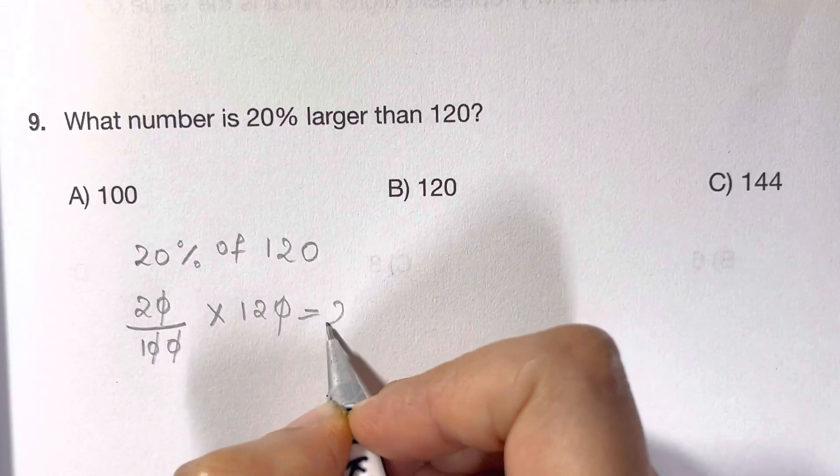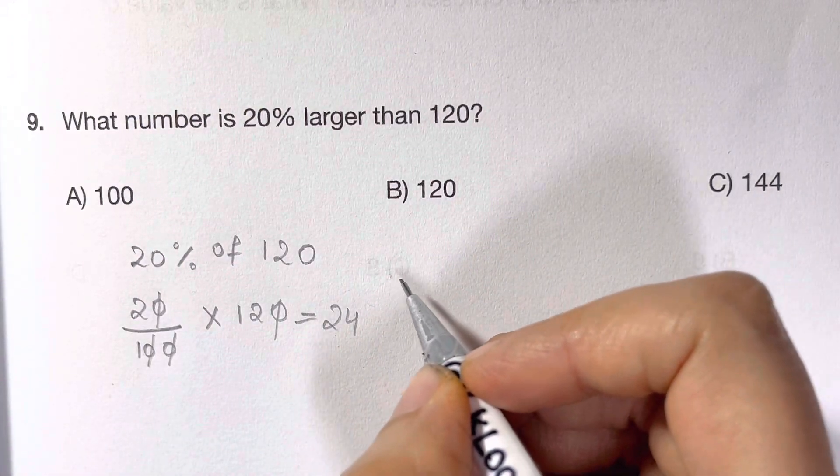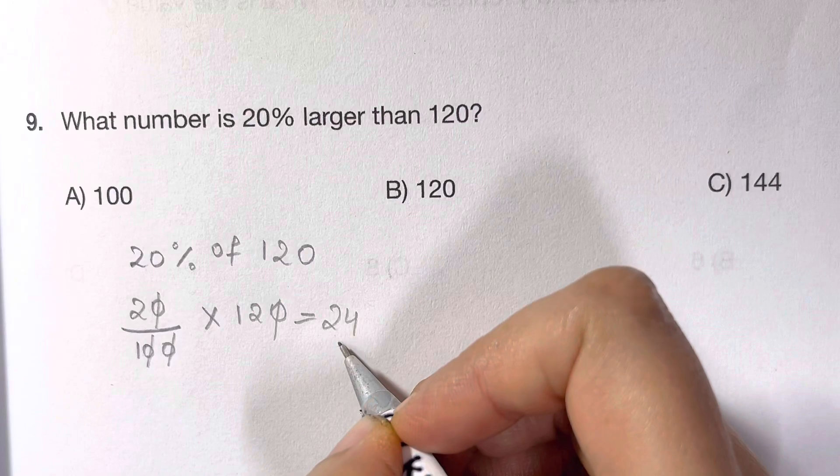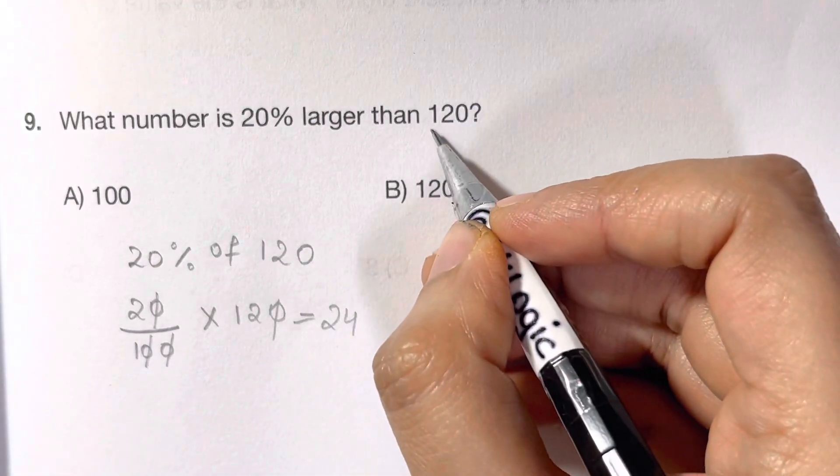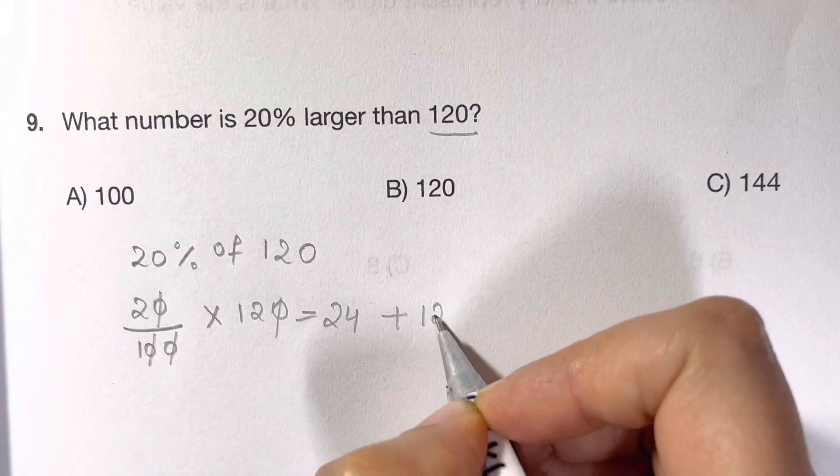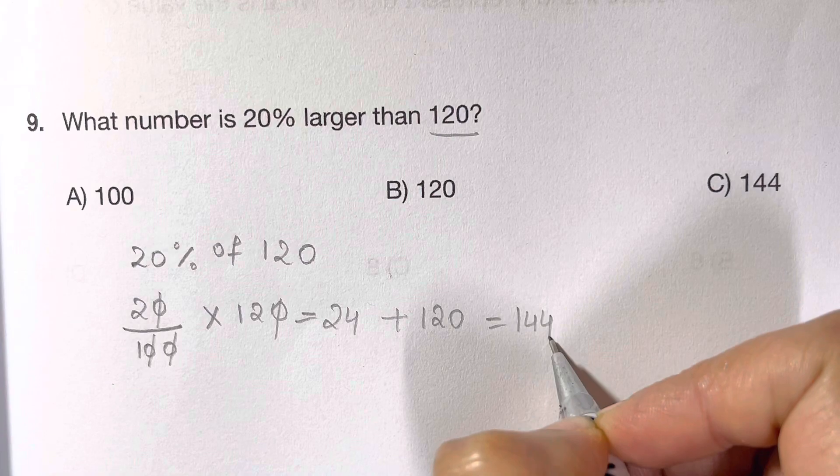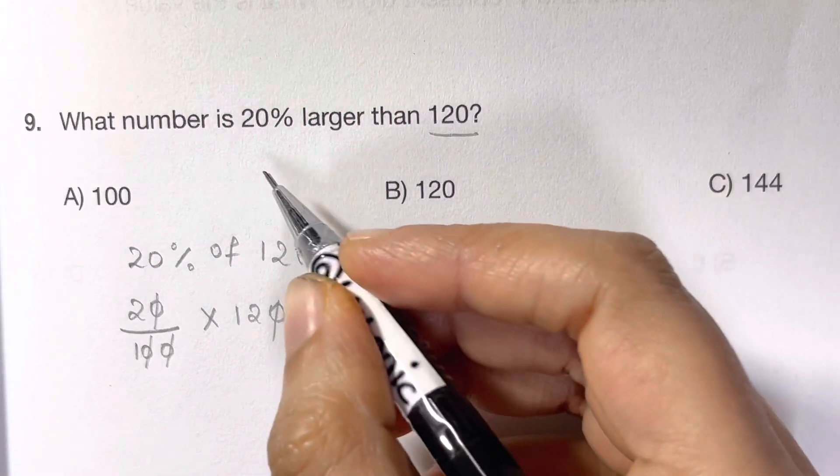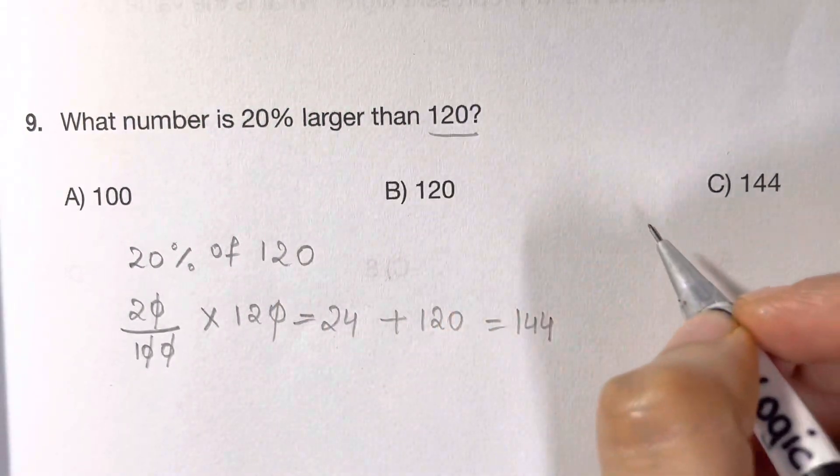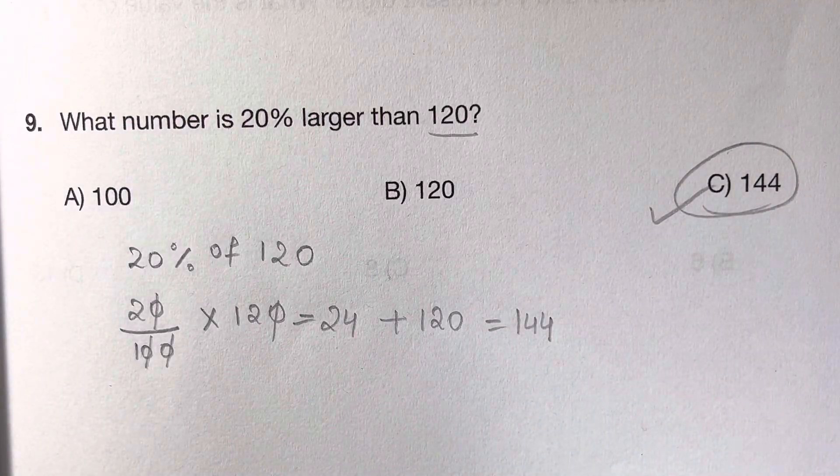So what's the original value? That's 24. That's 120 plus 24, so 24 plus 120 gives you 144. So the number which is 20 percent larger than 120 is C, 144.